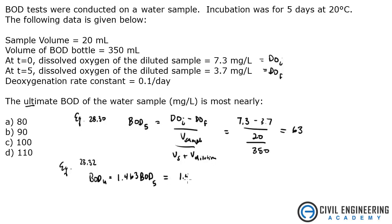So what's 1.463 times 63? That gives me 92.2 milligrams per liter. And that is most nearly B. So I'm going to say B on this.